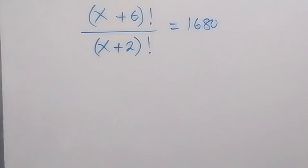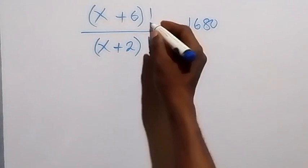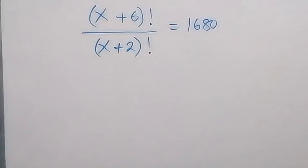Hello, you are welcome. We are going to solve this nice algebra equation involving factorial. We have (x + 6)! over (x + 2)! equals 1680.